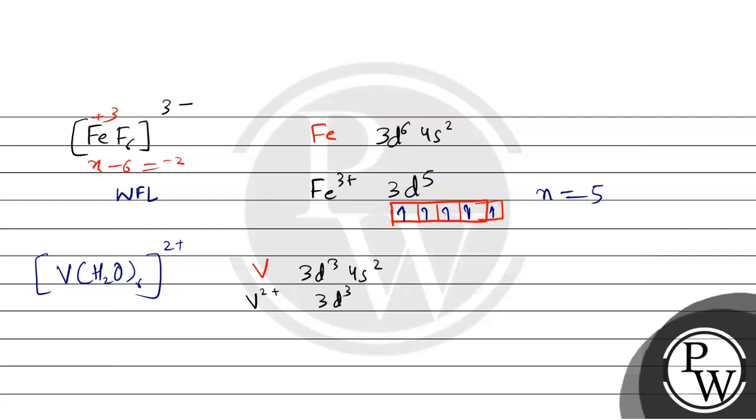Water we have, weak field ligand here. Here we have 3 electrons. Here we have 3 and number of unpaired electrons, here we have 3.